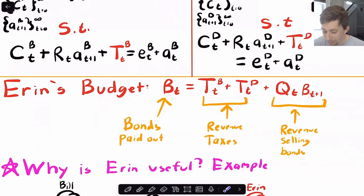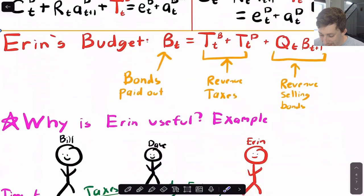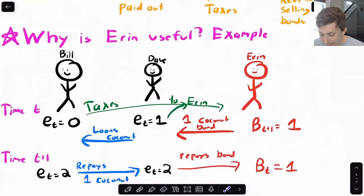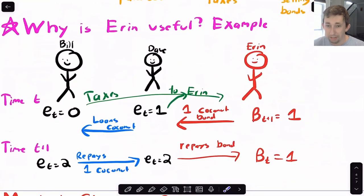And so what Erin is going to be useful for is that if Bill and Dave happen to get into a situation where they have really low endowment, they both have really low endowment. Well, if they have really low endowment, there's no room for any lending because both of them just don't have that many coconuts. But with Erin, what Erin can do, Erin can basically sell a bond to Dave in order to increase how many coconuts Dave has today. And Dave can take one of those coconuts and he can loan them to Bill so that Bill doesn't have to eat zero coconuts.